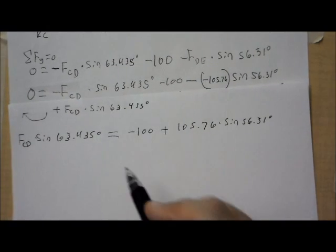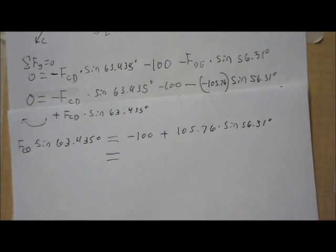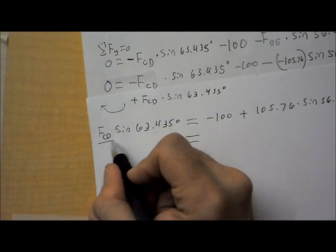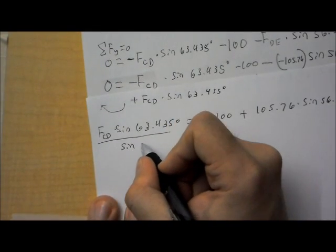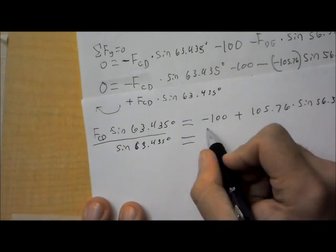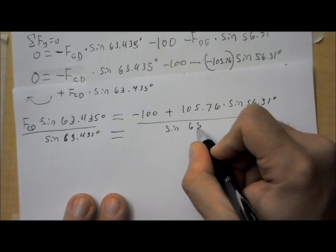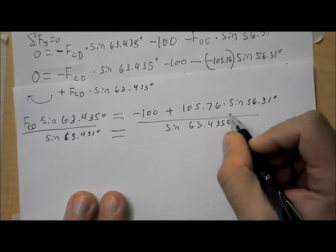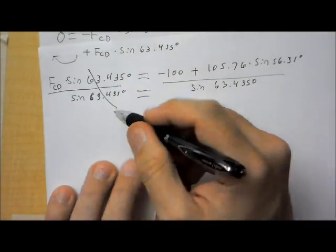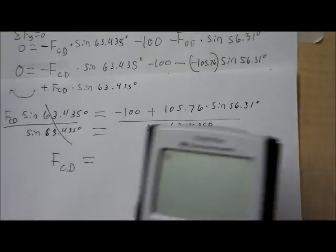So, I'm going to go ahead and figure out what that right side is. Actually, no, I'm going to divide both sides by sine 63.435 degrees. I'll also have to show you how I'm typing this in my calculator. So, in the end, this cancels out and I have FCD equals. All right. This is how I'm going to type this in my calculator. I'm going to do the top first and press enter.